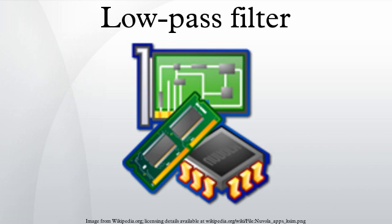In an electronic low-pass RC filter for voltage signals, high frequencies in the input signal are attenuated, but the filter has little attenuation below the cut-off frequency determined by its RC time constant. For current signals, a similar circuit using a resistor and capacitor in parallel works in a similar manner. Electronic low-pass filters are used on inputs to subwoofers and other types of loudspeakers to block high pitches that they can't efficiently reproduce. Radio transmitters use low-pass filters to block harmonic emissions that might interfere with other communications. The tone knob on many electric guitars is a low-pass filter used to reduce the amount of treble in the sound.